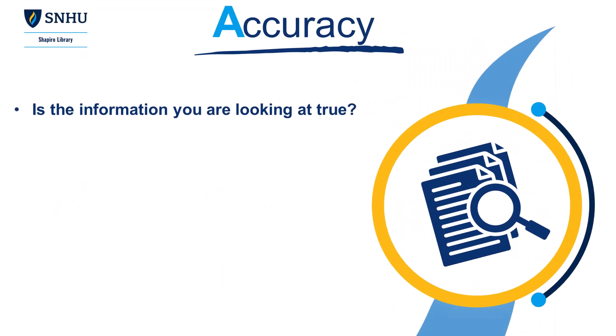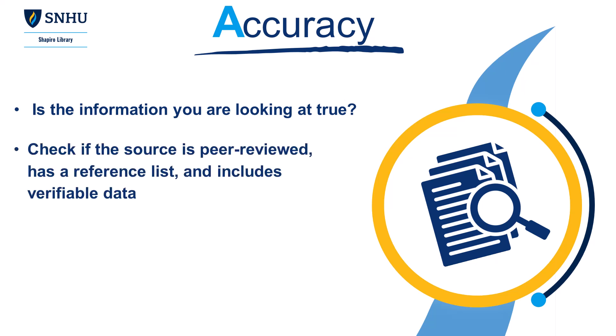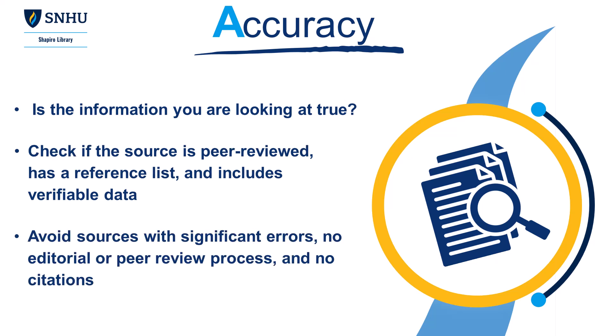Accuracy. Is the information you are looking at true? Try to verify the information presented. Check if the source is peer-reviewed, has a reference list, and includes verifiable data. Look for errors in grammar or logic, and assess if the source has undergone an editorial review. Avoid sources with significant errors, no official editorial or peer-reviewed process, and lack of citations, unless you are seeking non-scholarly materials.